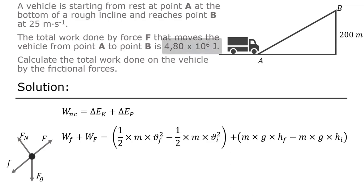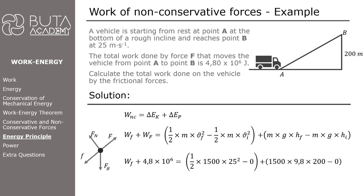The work done by force F is already given in the question. It is 4.8 times 10 to the power 6. Mass of the object is 1500 kilograms. Its final velocity is 25 meters per second. Initial kinetic energy is equal to 0 as object starts motion from rest or in other words from zero velocity. Gravitational acceleration is 9.8 meters per second square and point B is 200 meters high. Initial potential energy is 0 as object starts from the ground level with the height equal to 0. Work done by friction force is equal to minus 1.39 times 10 to the power 6 joules.